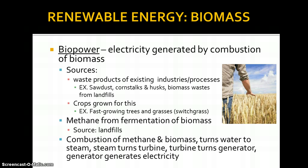I went up to the U.P. and visited several paper mills and lumber manufacturing facilities, and they actually do a really good job of using their waste materials to generate electricity. They have very little waste material that comes out of those industries because they burn it. Crops mainly used for biopower are fast-growing trees and grasses like switchgrass.